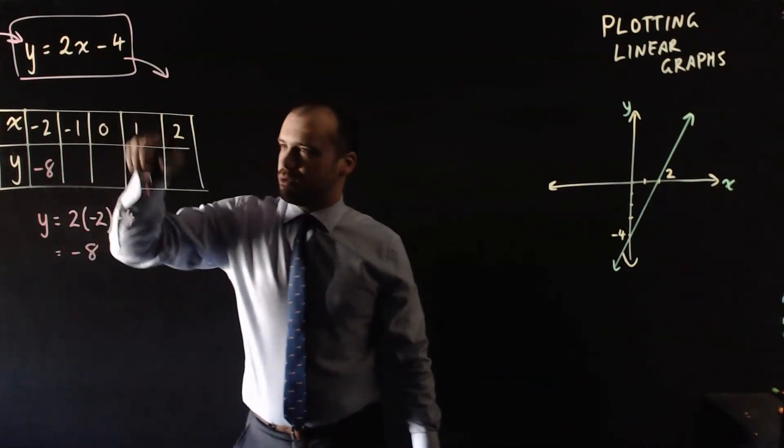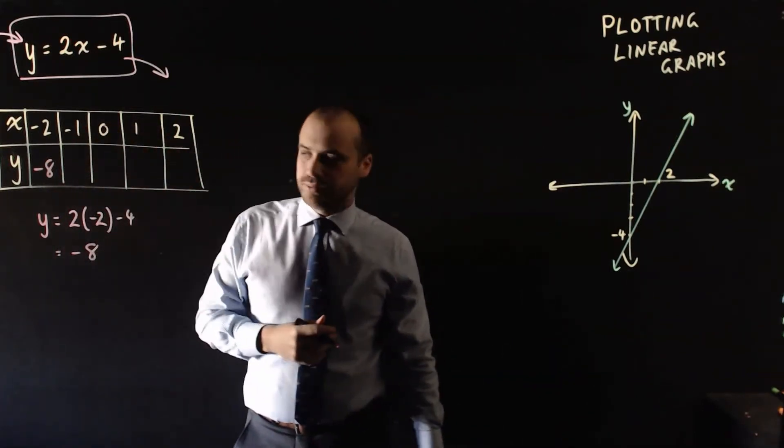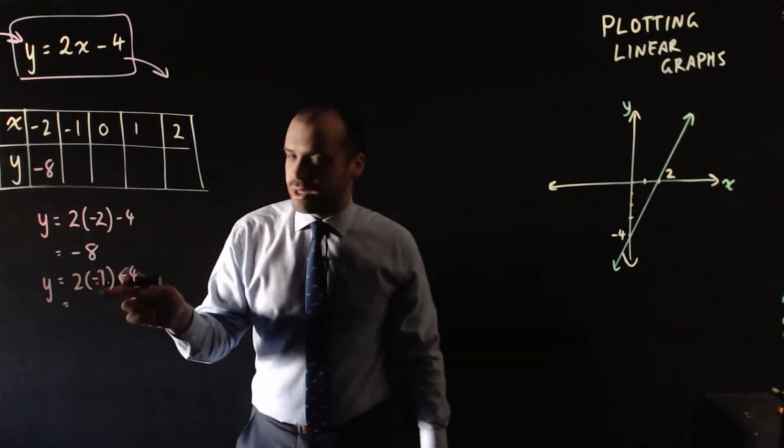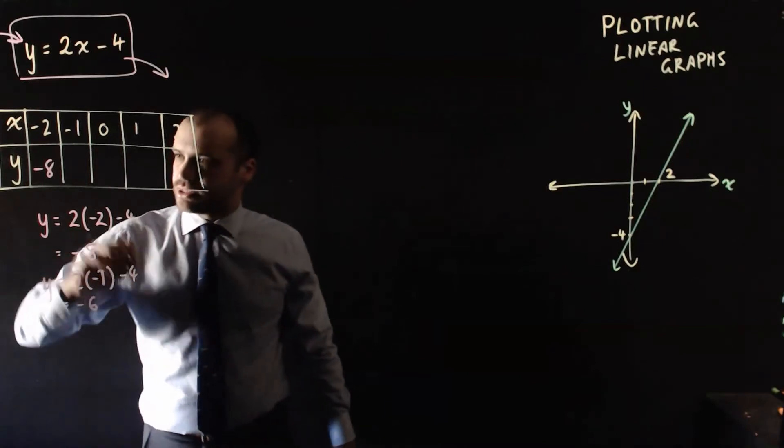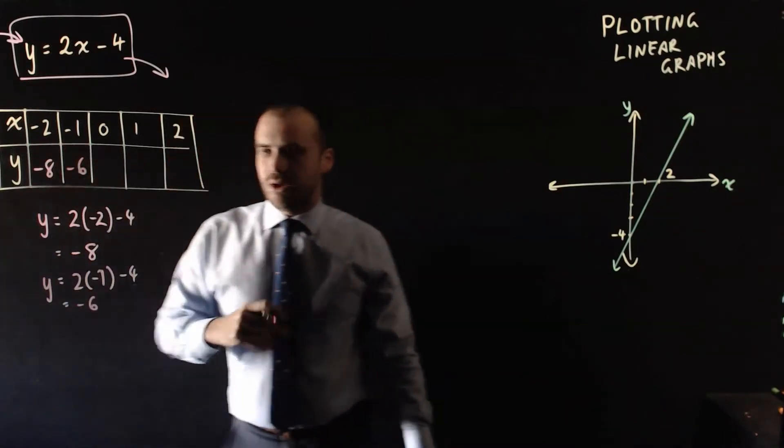We can put in negative 1, 0, 1, and 2 as well. So here I've put in negative 1. 2 times negative 1 is negative 2, minus 4 is negative 6.